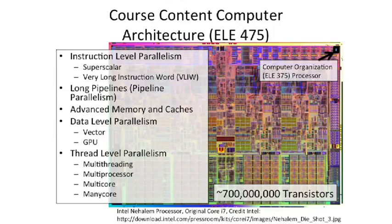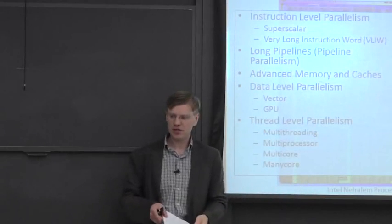So the first thing we're going to start off in this class talking about is we're going to talk about instruction level parallelism. So we're going to look at superscalar processors, which can execute multiple instructions at the same time. And it's done implicitly from sequential code. And we're also going to study very long instruction word processors, or what's called VLIW processors. We're going to hint a little bit about pipeline parallelism and look at how to build longish pipeline processors.